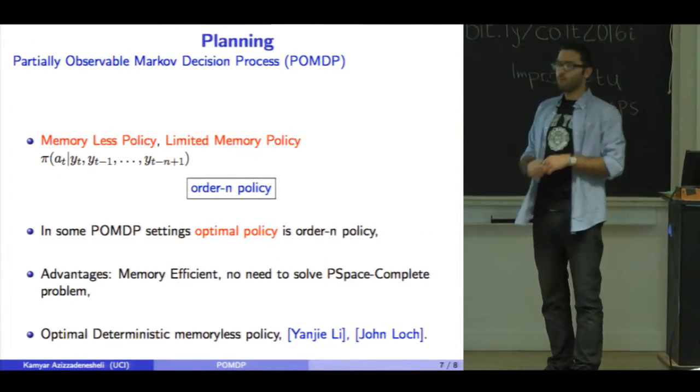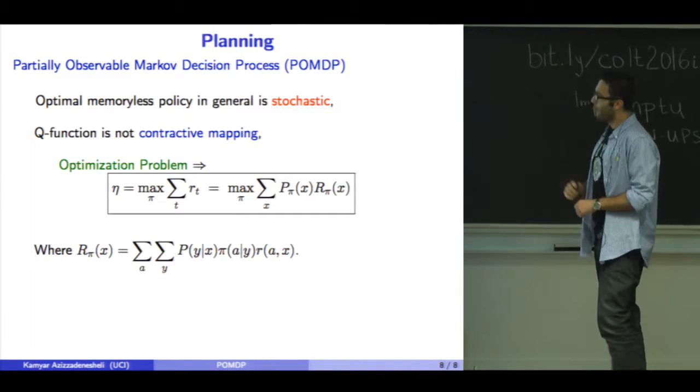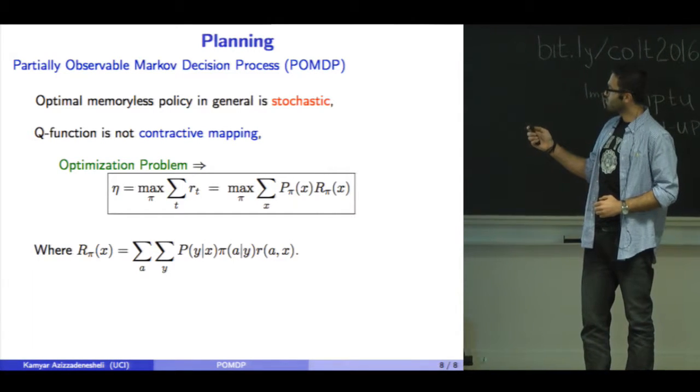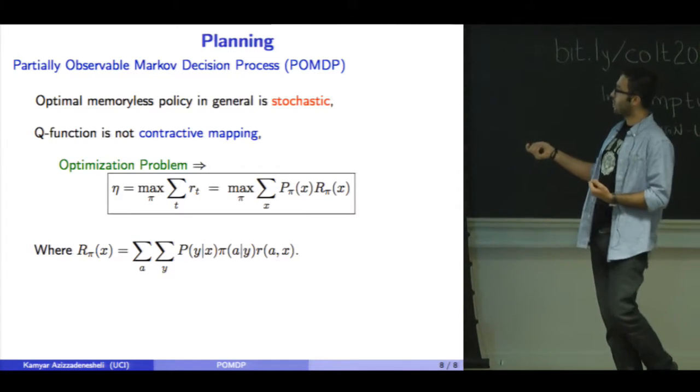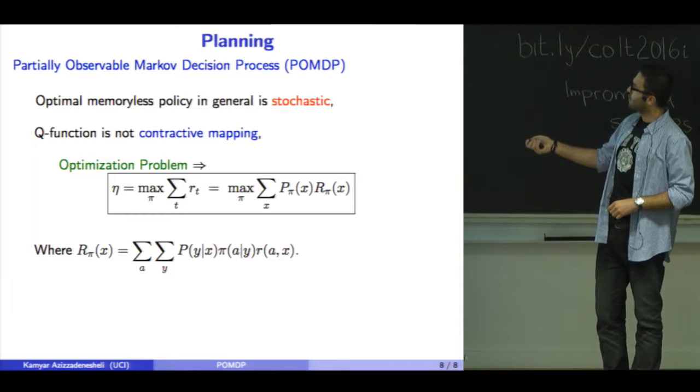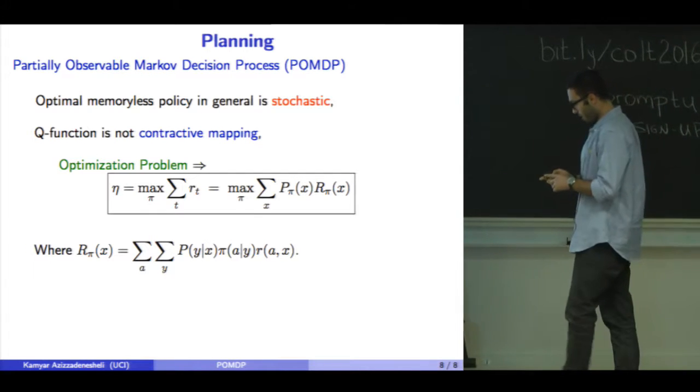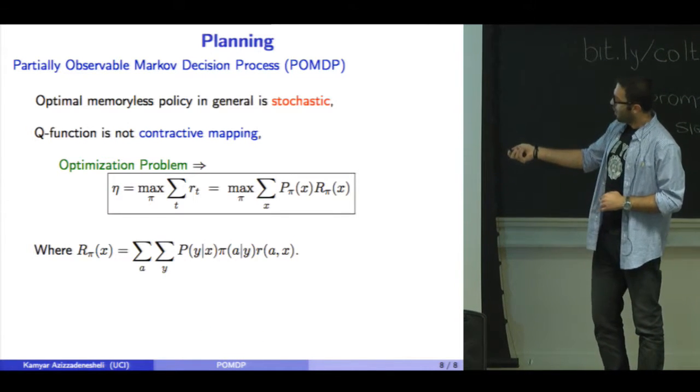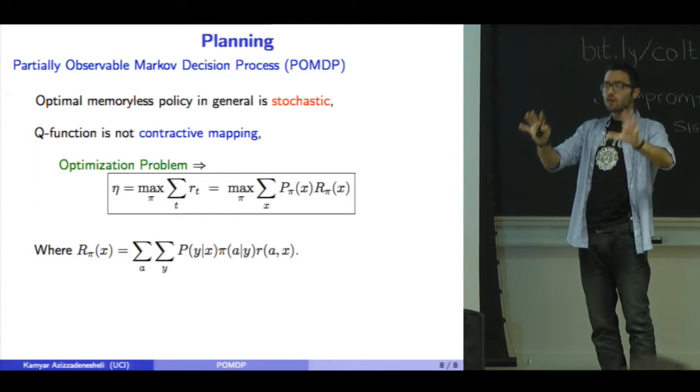Some work has found optimal memoryless policies in deterministic settings. But the optimal memoryless policy for POMDPs is stochastic, making it harder. The optimization problem is shown here in its simplest form. One factor relates to the policy linearly, but another does not. The interesting question is: how do we solve for this stochastic memoryless policy, and in what settings is it optimal? Thank you.